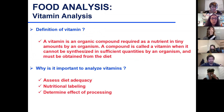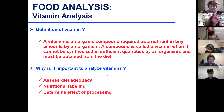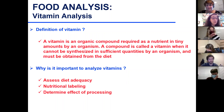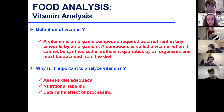Here's the definition of a vitamin: it is an organic compound required as a nutrient in very small amounts, and it's called a vitamin because we cannot synthesize it in sufficient quantity in our bodies. It's important to assess diet adequacy - whether we have a sufficient amount of vitamins in our diet - for nutrition labeling and to determine the effect of processing, which is very important for vitamins susceptible to thermal degradation, oxidation, or light degradation.